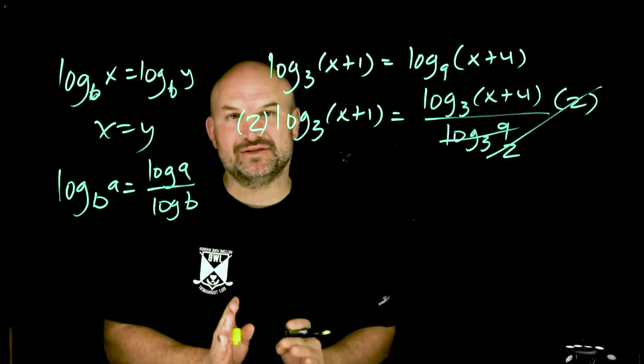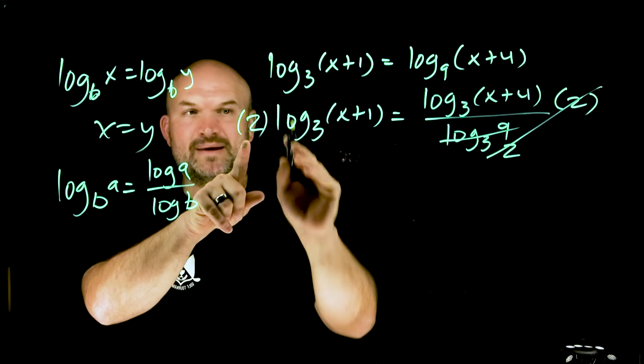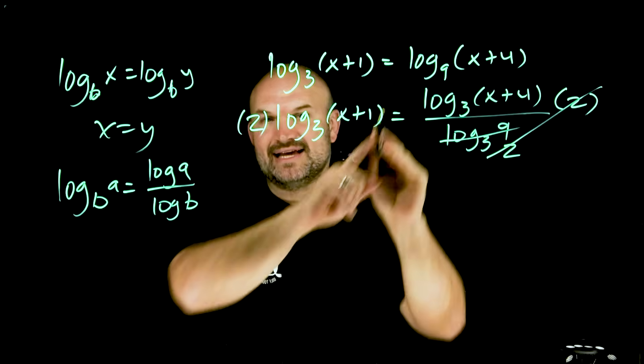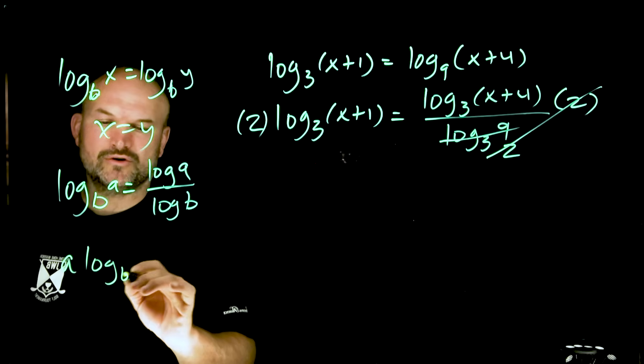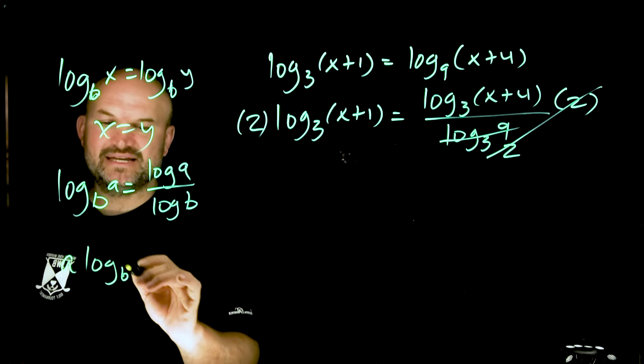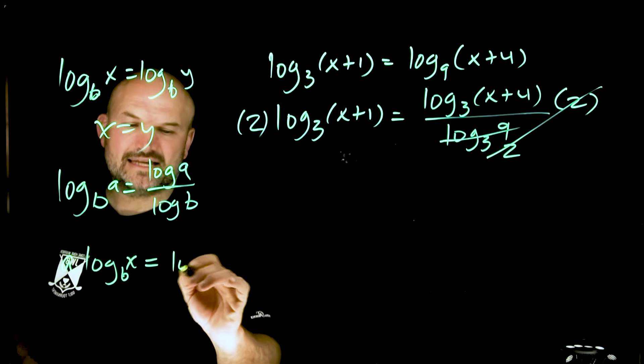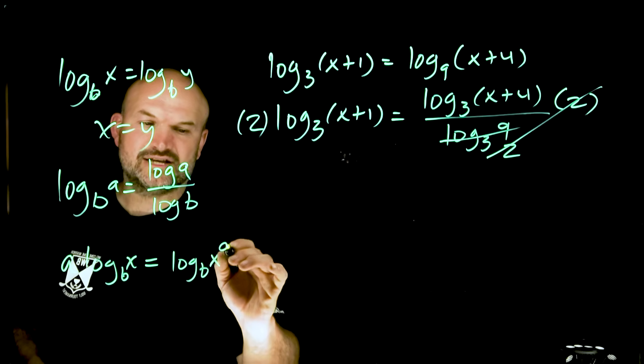However, I can use my properties of logarithms to say whatever I'm multiplying a logarithm by, I can rewrite that as the power of the argument. That is going to be our product rule of logarithms. If I have a times log base b of x, I can rewrite that as log base b of x to the a.